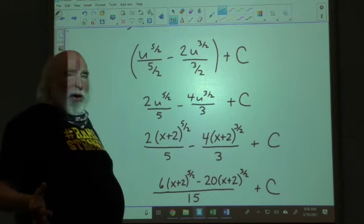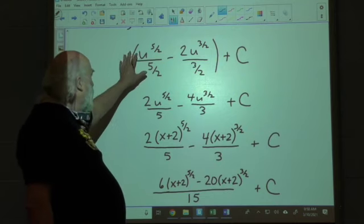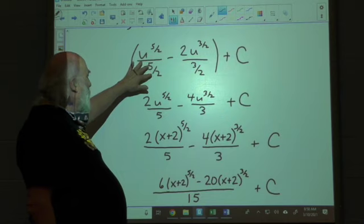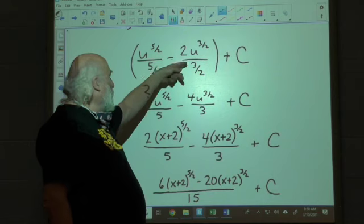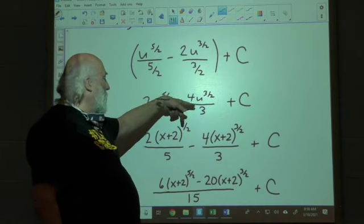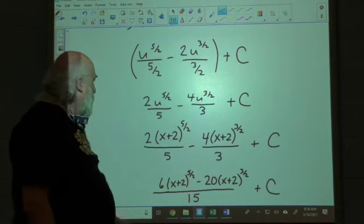So this is all mathematical manipulation at this point. So if you divide by 5 halves, it's multiplied by 2 fifths. So that's where we get that from. Flip that, and 2 times negative 2 is negative 4. So negative 4u, 3 halves over 3, plus c.